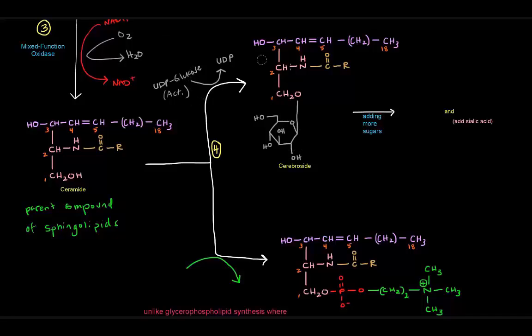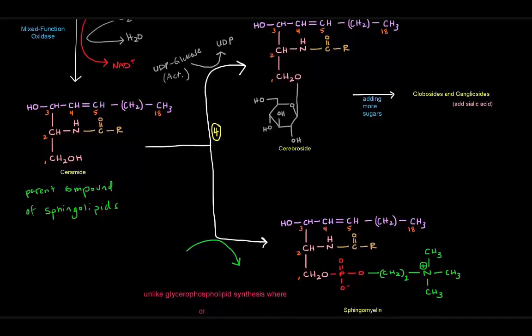Once we create the cerebroside, we can add more sugars to give us globosides. And if we add a sialic acid or even more sugars, we can get gangliosides as well. If you're unfamiliar with these terms or they seem kind of fishy, I would encourage you to go back and watch the sphingolipids portion of the lipids series.